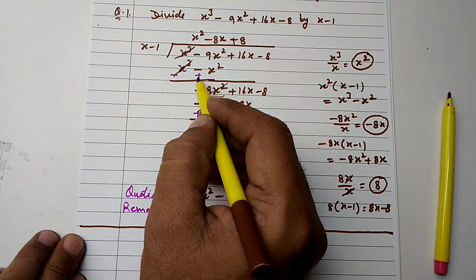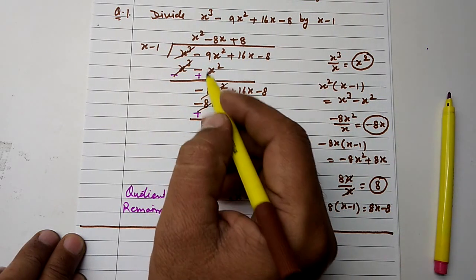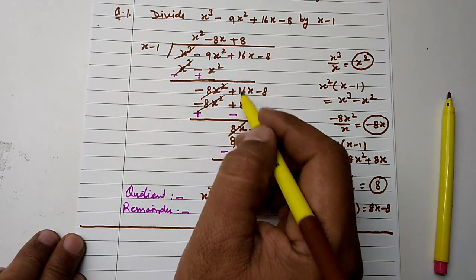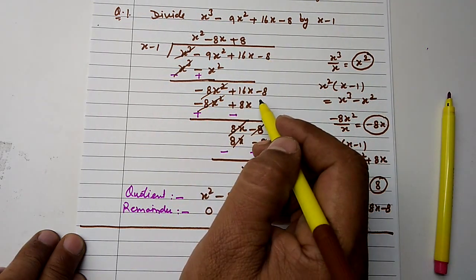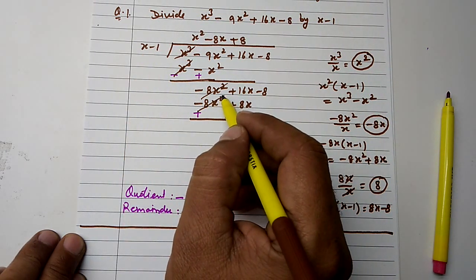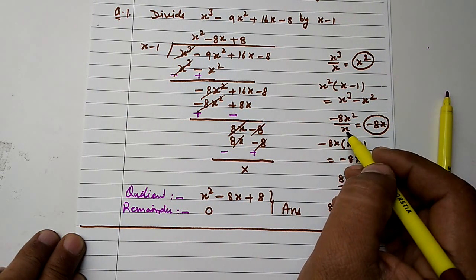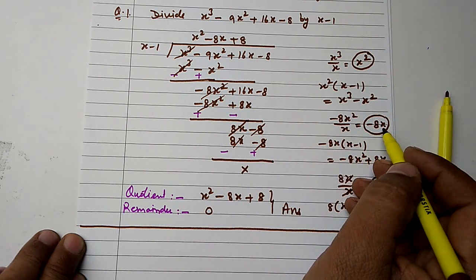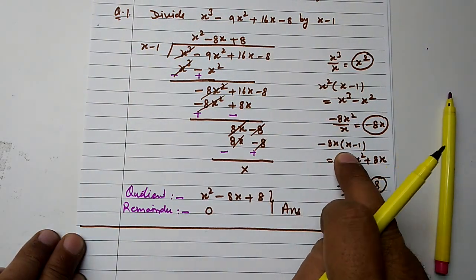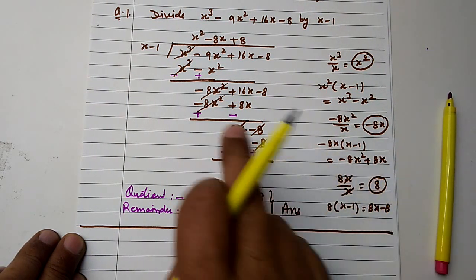We change the signs — negative becomes positive. Both are like terms with opposite signs, so they cancel. Minus 9 plus 1 gives minus 8x squared, brought down with plus 16x minus 8. We divide minus 8x squared by x to get minus 8x, then multiply minus 8x by x minus 1 to get minus 8x squared plus 8x.